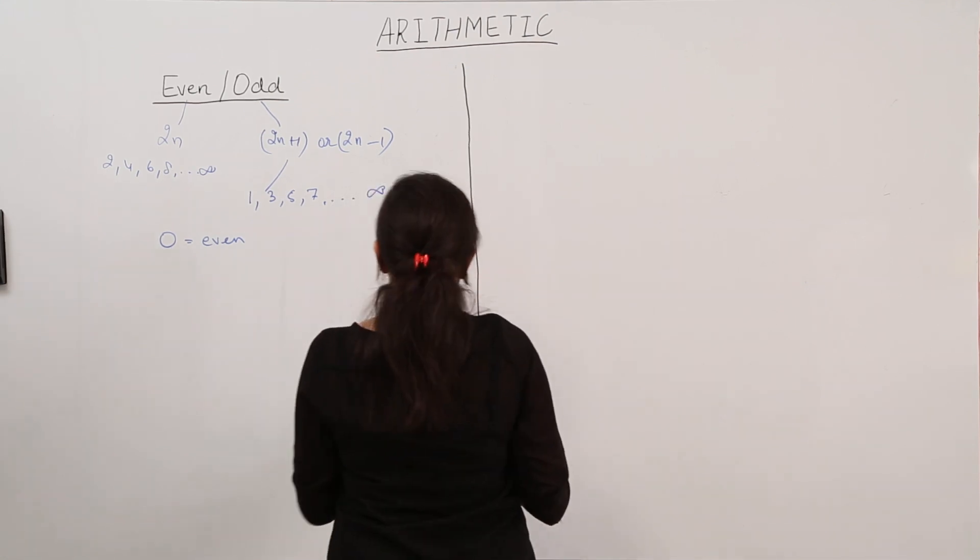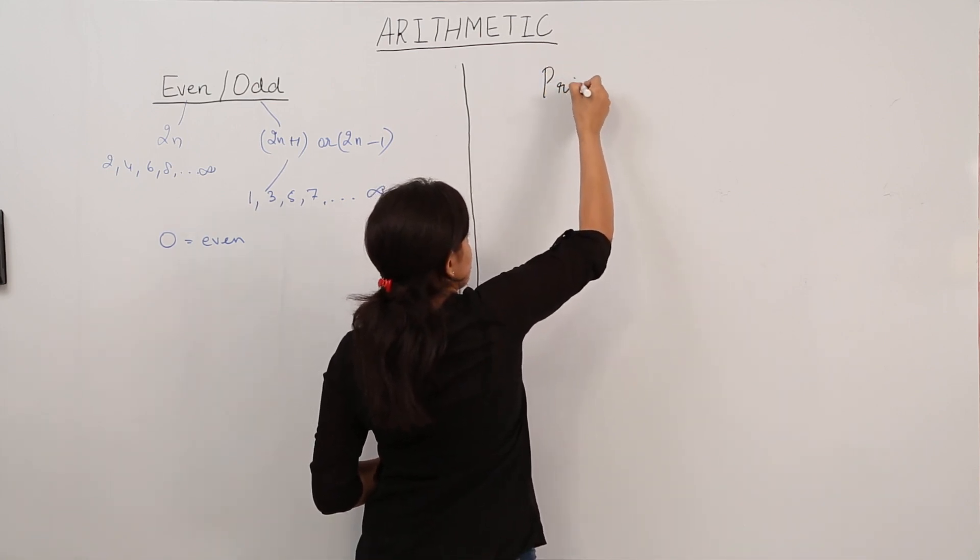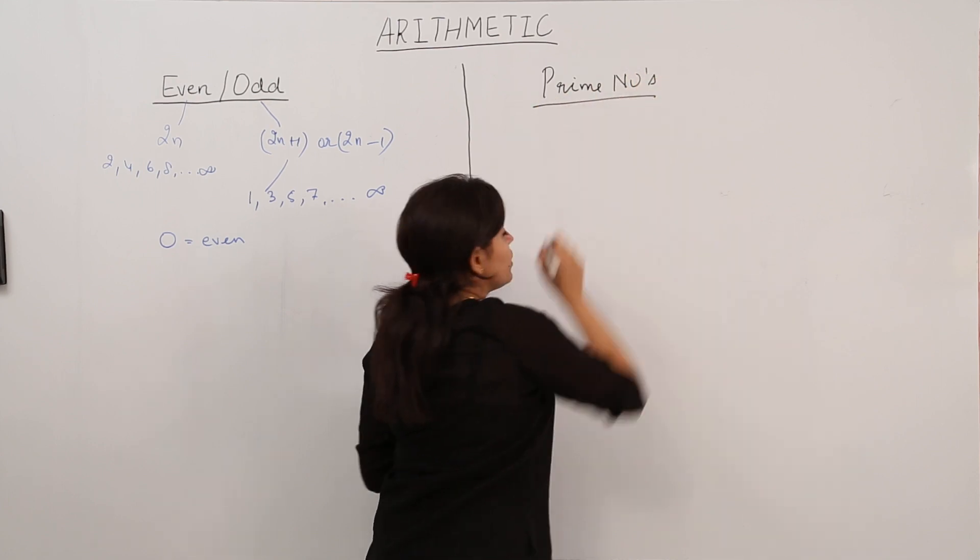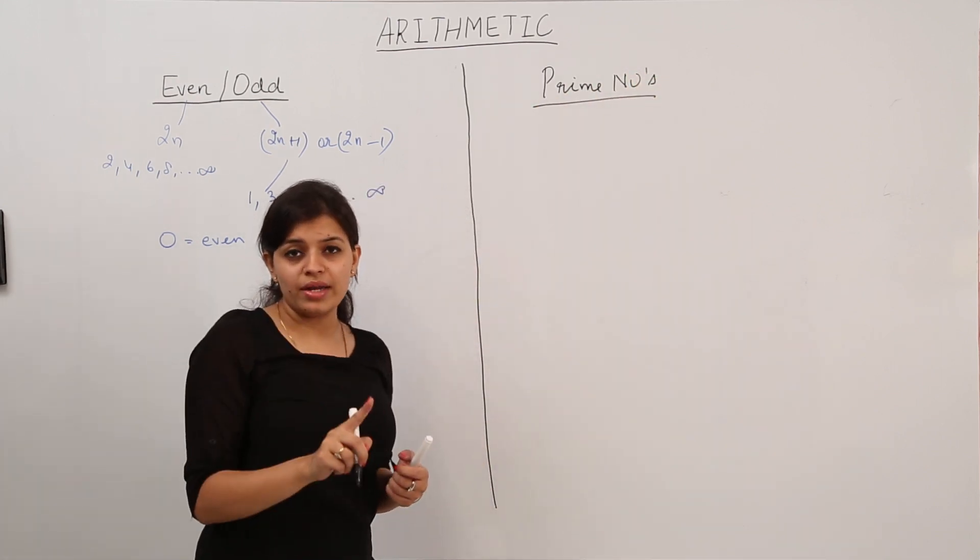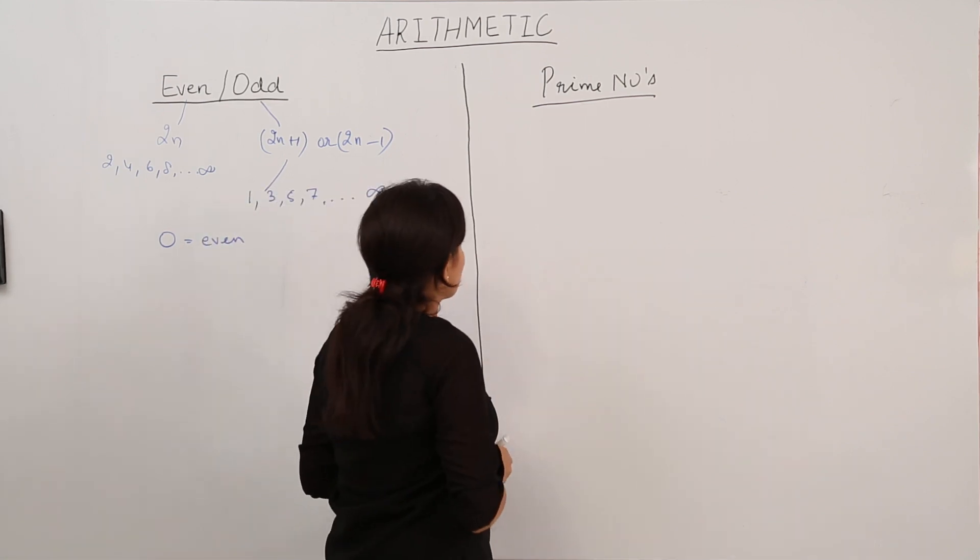Another set that we will discuss today are known as prime numbers. What are prime numbers? Those numbers which have only two factors, that is the number 1 and the number itself, are known as prime numbers. Let's see some examples.